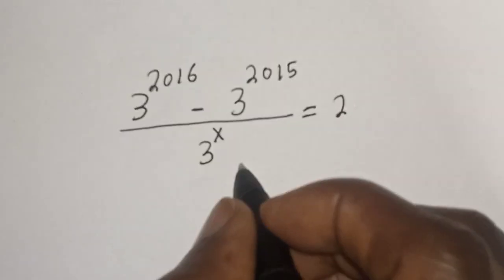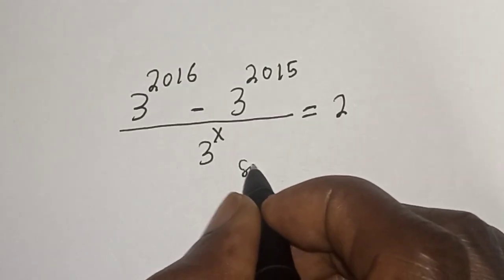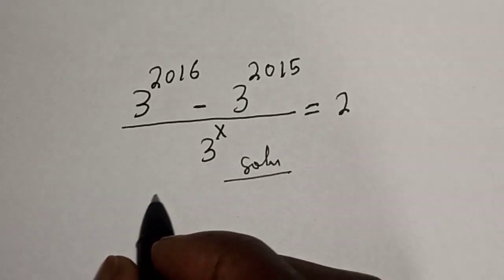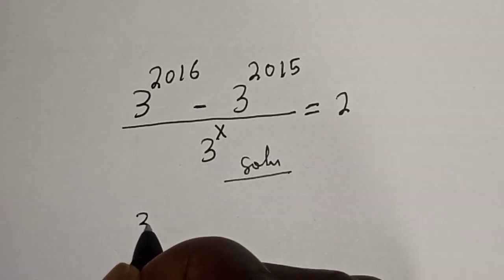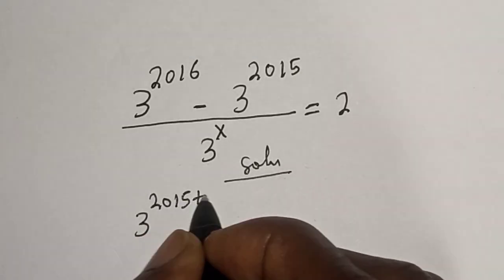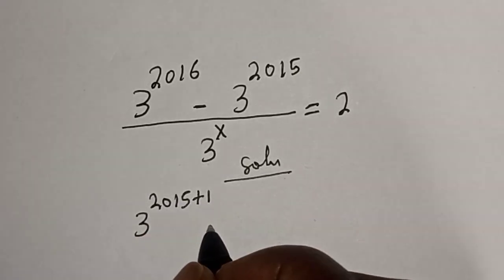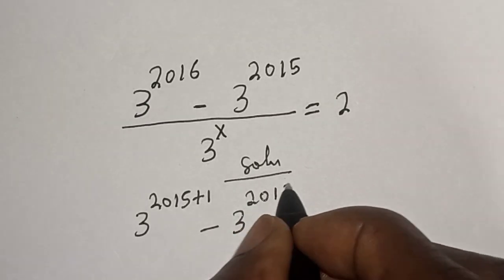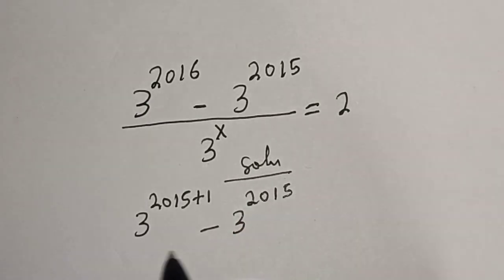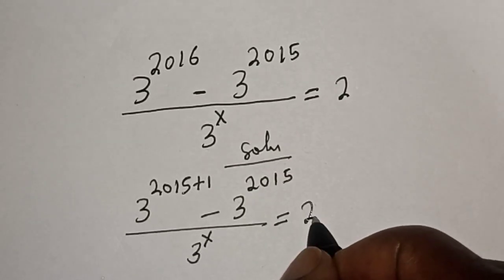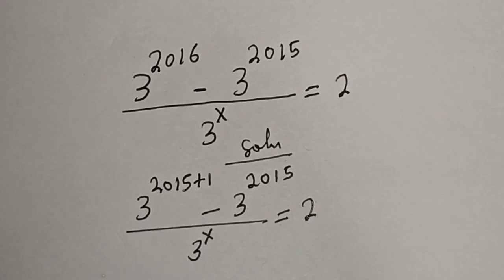Like, share, comment and subscribe. Solution: 3 raised to power 2016 can be written as 3 raised to power 2015 plus 1, minus 3 raised to power 2015, over 3 raised to power s, is equal to 2.